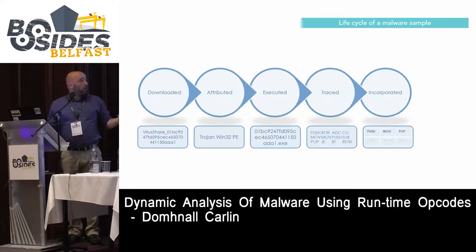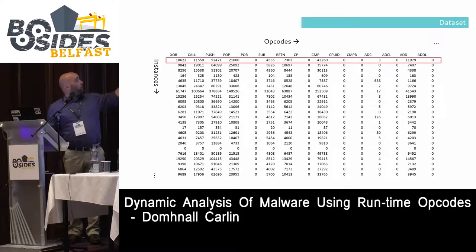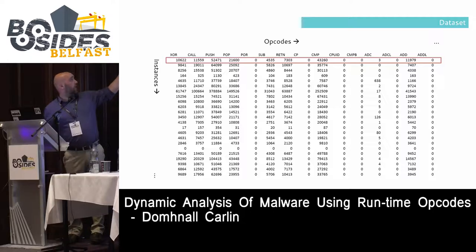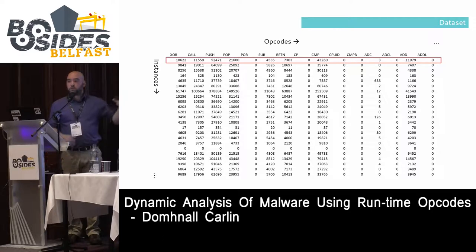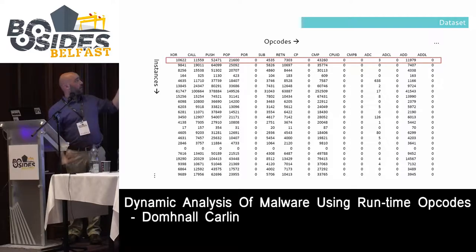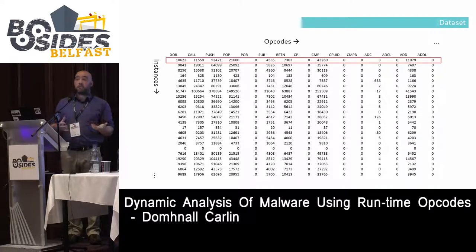The data is incorporated into a large dataset — essentially a CSV file. One row represents one malware instance: for example, the opcode XOR occurs 10,622 times, CALL 11,000 times, and so on. We also do some manipulation: we can switch to frequency, representing the percentage of total opcodes that are XOR. We also have a parser that encodes opcodes as numbers in sequence, which can feed into Hidden Markov Models depending on the toolbox used.